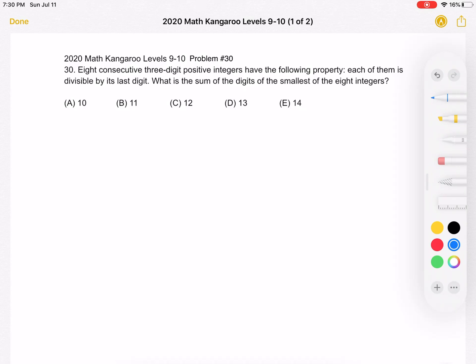What is the sum of the digits of the smallest of the eight integers? A. 10, B. 11, C. 12, D. 13, or E. 14. This is the problem as it originally appeared on the test.